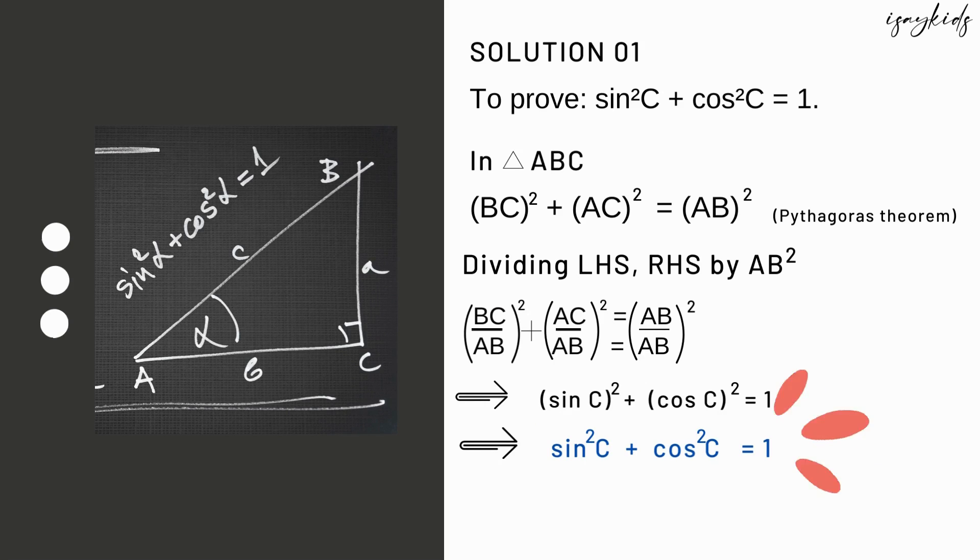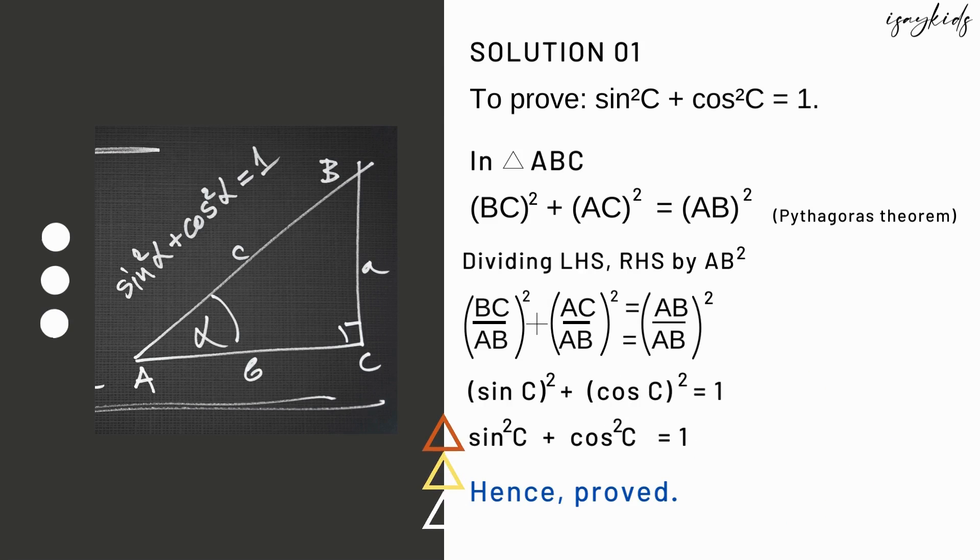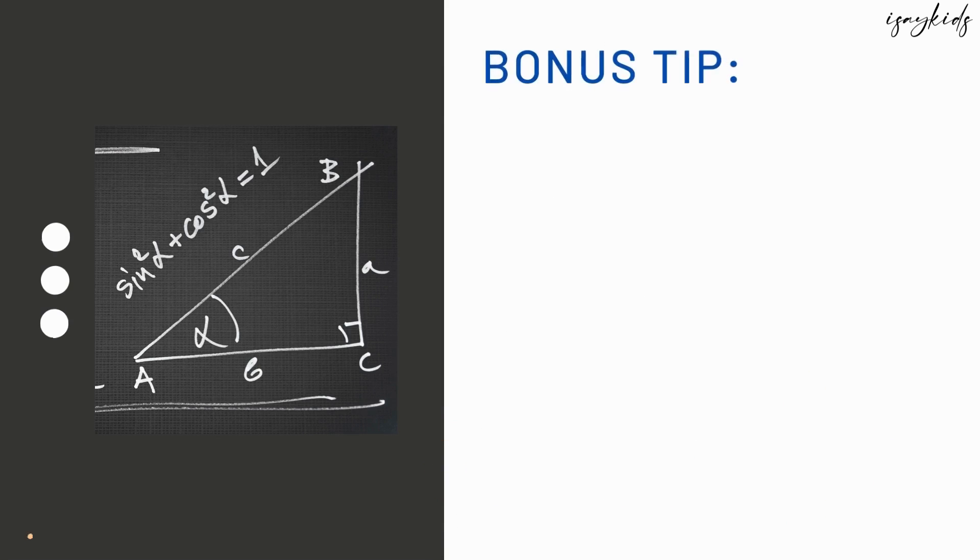Pretty simple, right? Let's see the other identities too. Now since we have proved that sin²C + cos²C = 1.